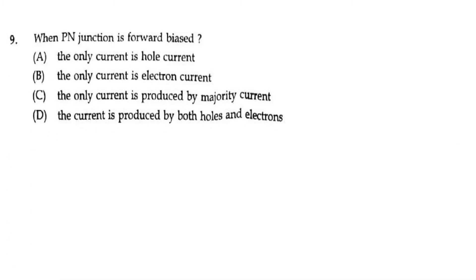When a PN junction is forward biased, P is connected to positive potential and N is connected to negative potential. The N region consists of majority carriers as electrons, and P consists of positive holes. So both currents are flowing — the current is produced by both electrons and holes.